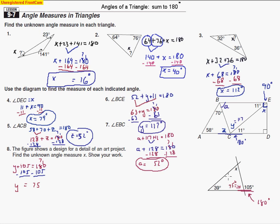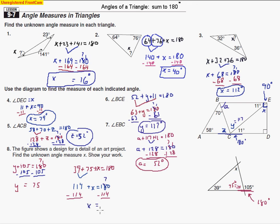Now we can use the triangle angle sum theorem. The three angles are 39, 75, and x, so 39 plus 75 plus x equals 180. Adding 39 and 75 together gives 114, so 114 plus x equals 180. Subtracting 114 from both sides — borrowing, changing the 8 to a 7 — we get x equals 66 degrees. That is the value of x.